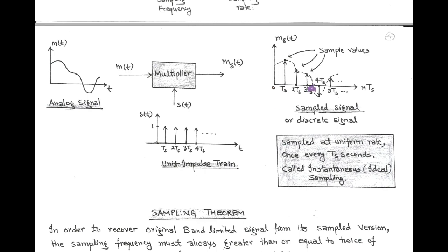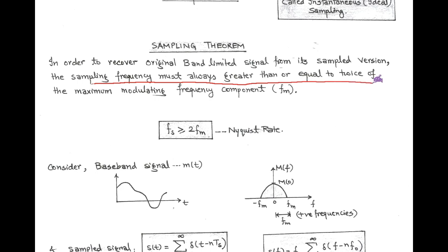Now we discuss the next topic, that is the sampling theorem. As we know, discrete signals are generated using the sampling process. And in order to recover the original band-limited signal, we use the sampling theorem. According to the sampling theorem, we can recover the original band-limited message signal from its sampled version by simply taking the sampling frequency fs always greater than or equal to twice of fm. Here, fm is called the maximum modulating frequency. And this criteria to recover the original band-limited message signal from its sampled version is called the Nyquist rate.